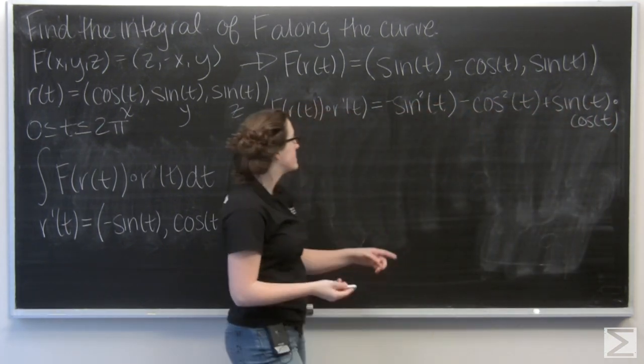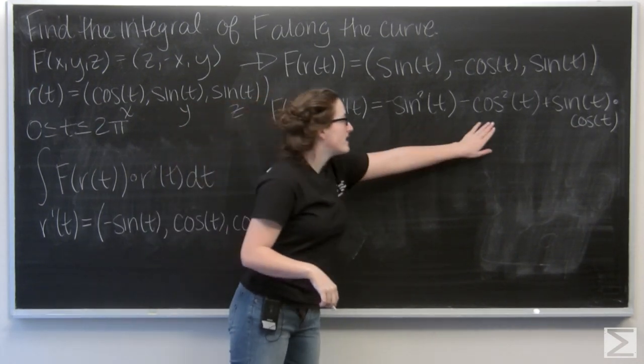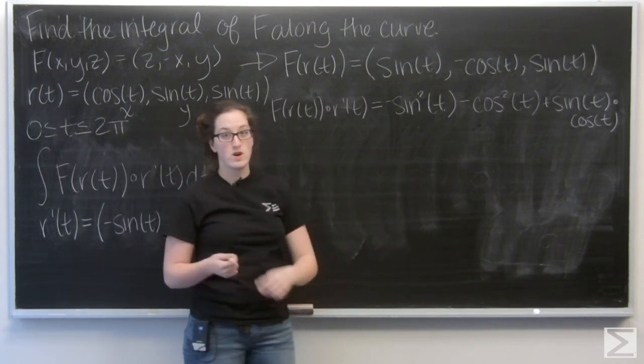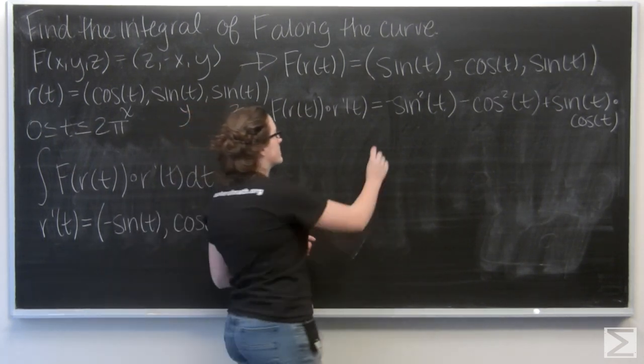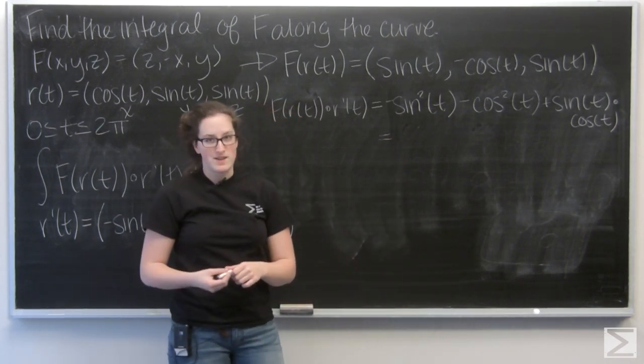I see a trig identity here that I can cancel out. So negative sine squared of t minus cosine squared of t is like negative 1 times sine squared plus cosine squared, which we know is 1. So I can rewrite this as sine of t cosine of t minus 1.